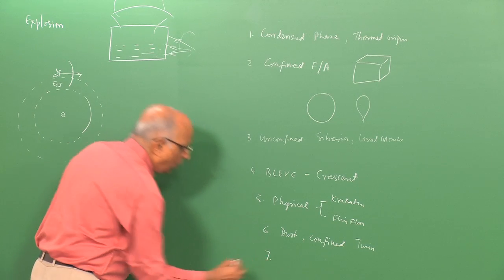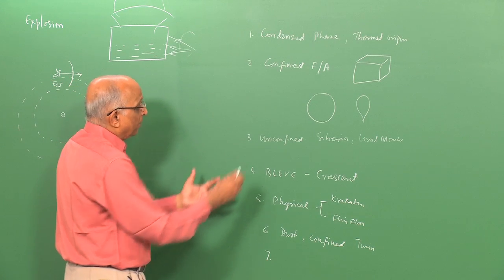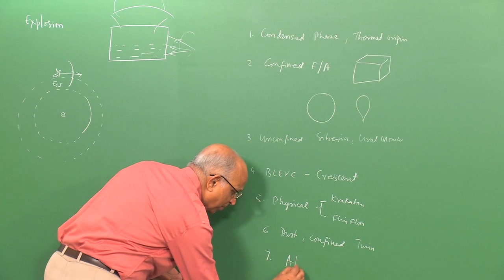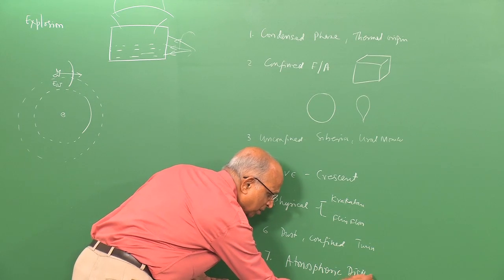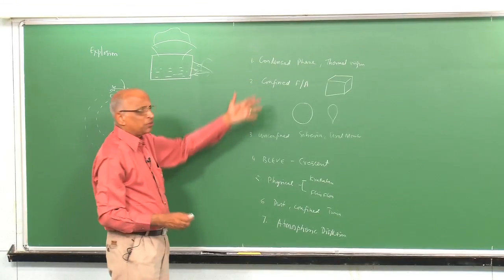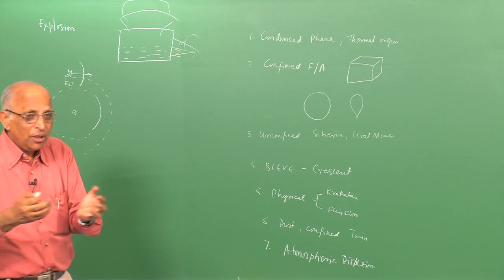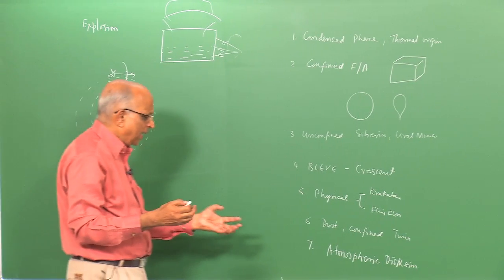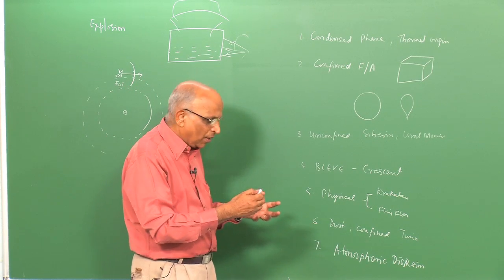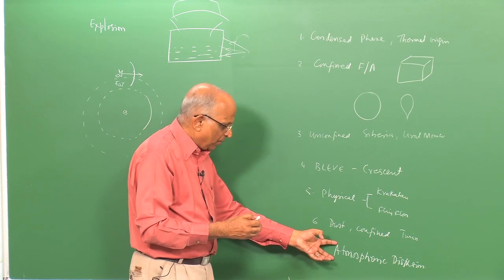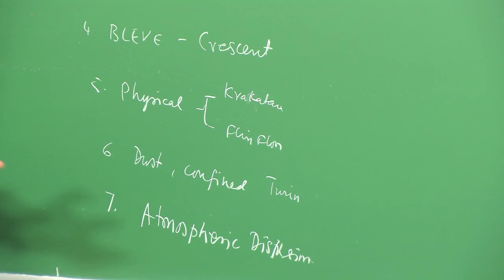The seventh category was atmospheric dispersion, where the atmosphere plays a role in mixing gases. This could be from fuel vapors dispersing via the wind, or toxic gases such as in the Bhopal gas tragedy, where on a cold day with temperature inversion, gases could not escape into the atmosphere, causing a disaster. We also discussed the Great Smog of London.